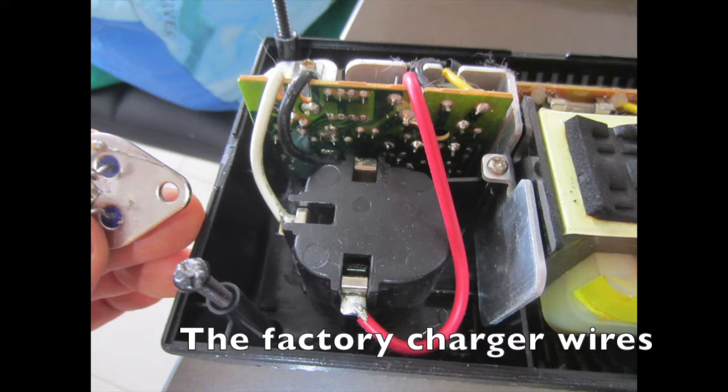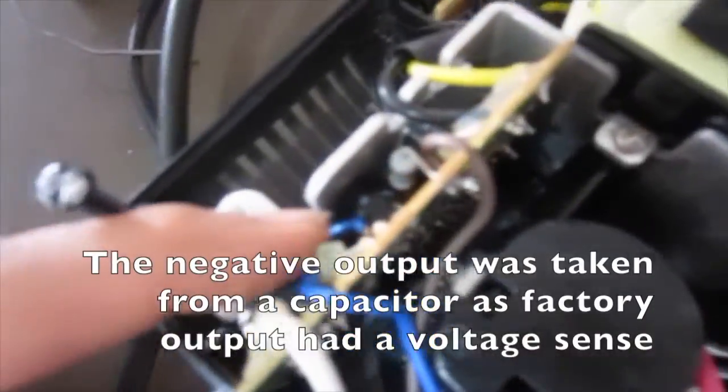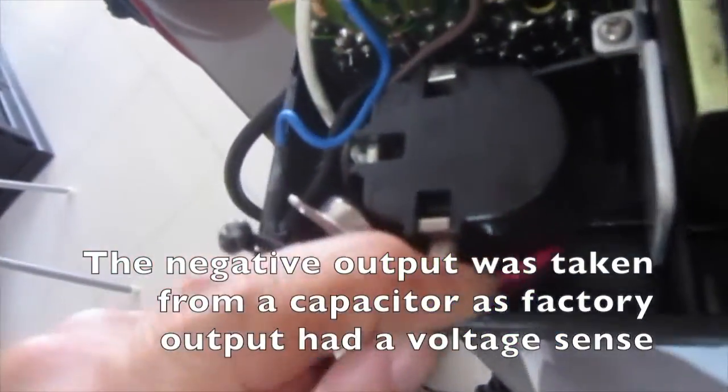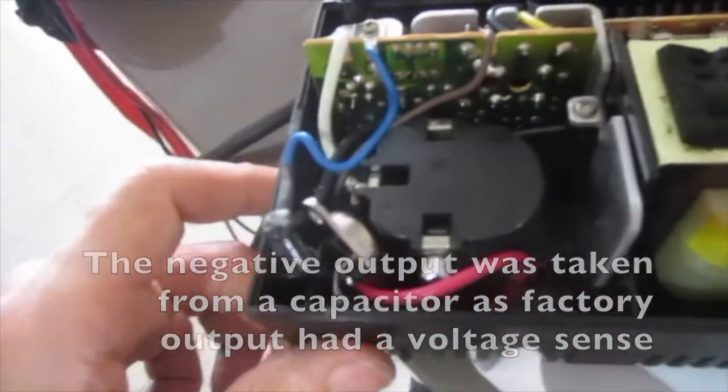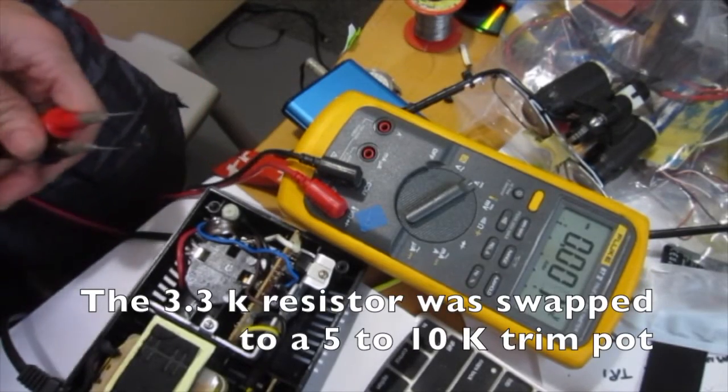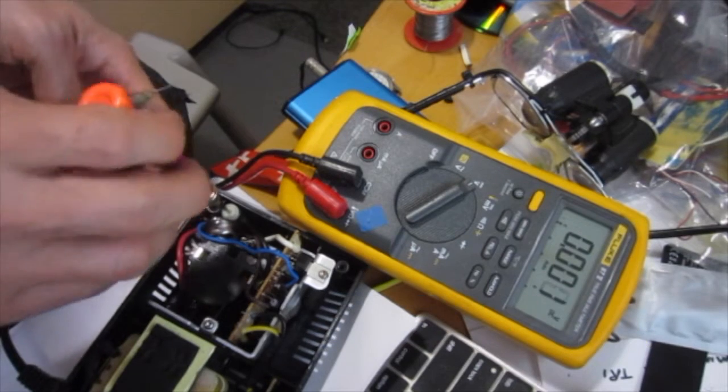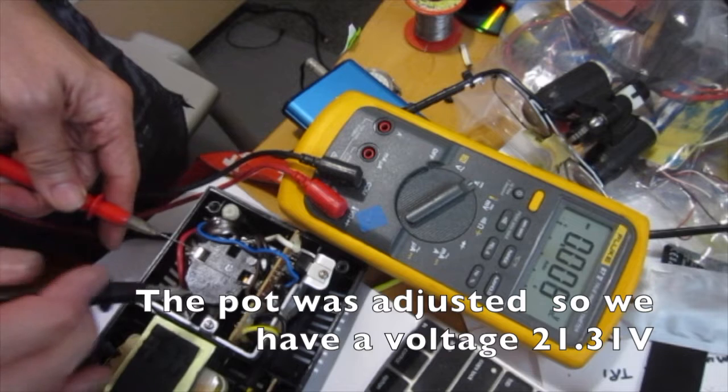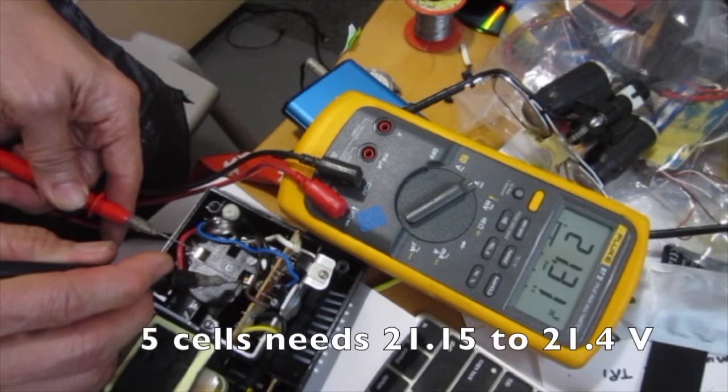This is the factory charger wires. The negative output was taken from a capacitor as the factory output had a voltage sensor on it. The 3.3k resistor was swapped to a 5 to 10k pot. The pot was adjusted so we have a voltage of 21.31 volts.